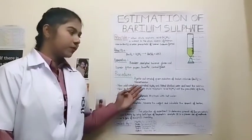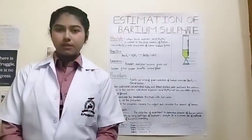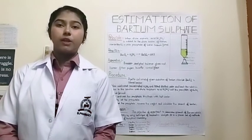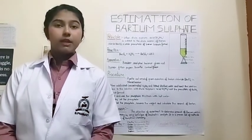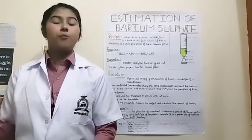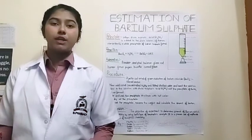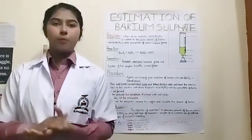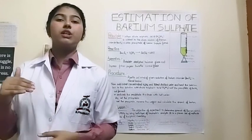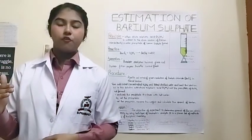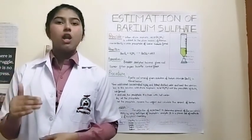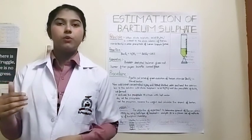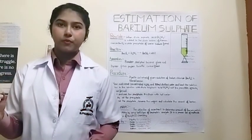The first step of the procedure is: weigh accurately about 0.60 gram in a platinum crucible. Then take 5 gram of potassium bicarbonate and 5 gram of sodium bicarbonate and mix them together properly. Then heat it at 1000 degrees Celsius for 15 minutes. Then allow it to cool, filter it, and filter the residue in 150 ml of water.